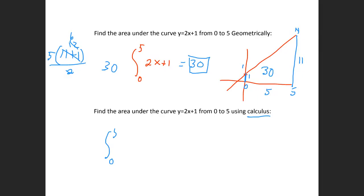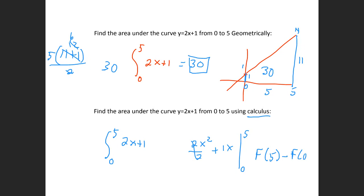The problem is exactly the same: 0 to 5 of 2x + 1. I have to take an integral. The integral of 2x + 1 is 2x² over 2 plus 1x. I draw my line because that shows I've taken the integral, from 0 to 5. This reduces, so it's just x² + x. My answer is going to be f(5) minus f(0). If I put 5 in: 5 squared is 25 plus 5, that's 30. Minus f(0): 0 plus 0 is 0. My answer is 30.